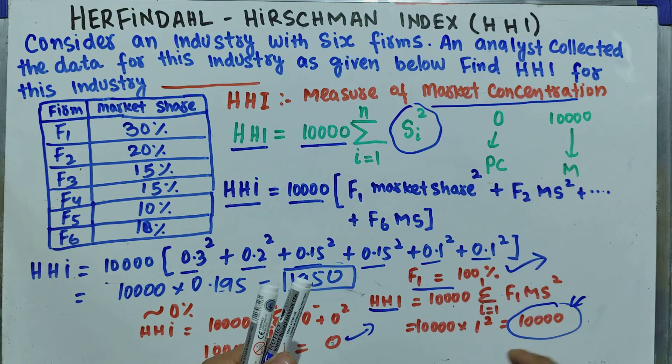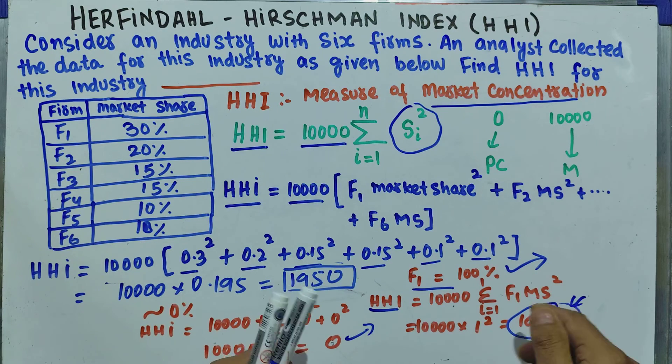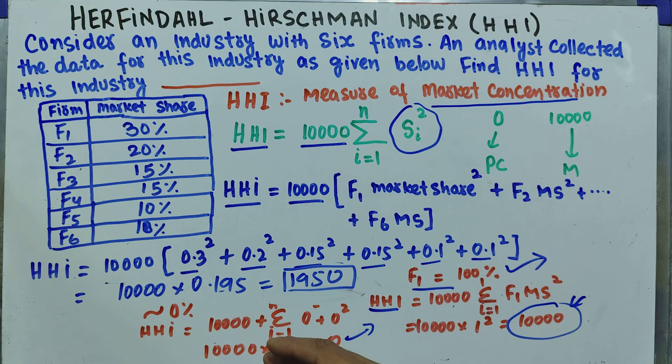Zero denotes perfect competition, and 10,000 denotes the case of monopoly. I hope I made myself clear in this video. Thank you.